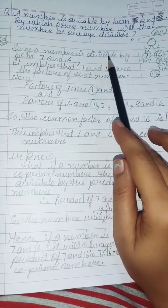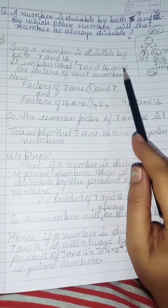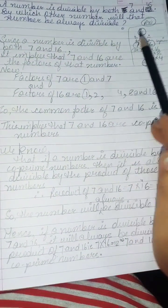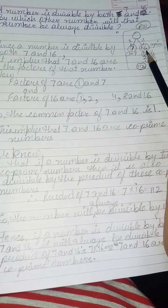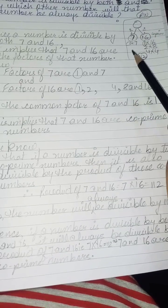Now since a number is divisible by both 7 and 16, it implies that 7 and 16 are the factors of that number. Ki yeh ek number hai, wuh 7 or 16 donoh se divide ho ra hai, iska matlab ki 7 or 16 is number ke factors hai.